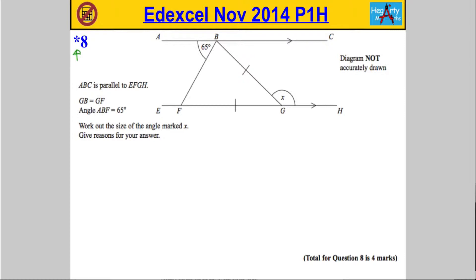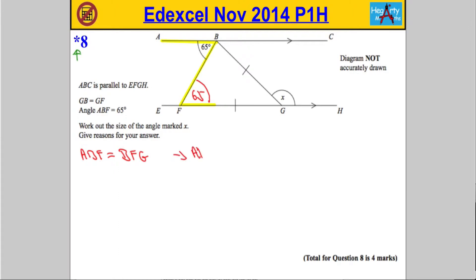We're going to have to use the properties of angles in parallel lines. What I'm demonstrating here is something you might know as a Z-angle. Z-angles are equal to each other, but we're not allowed to call them Z-angles. So this angle of 65 here has to be the same as this angle here, which is 65. ABF is equal to BFG because they are what's called alternate angles — alternate angles are equal.